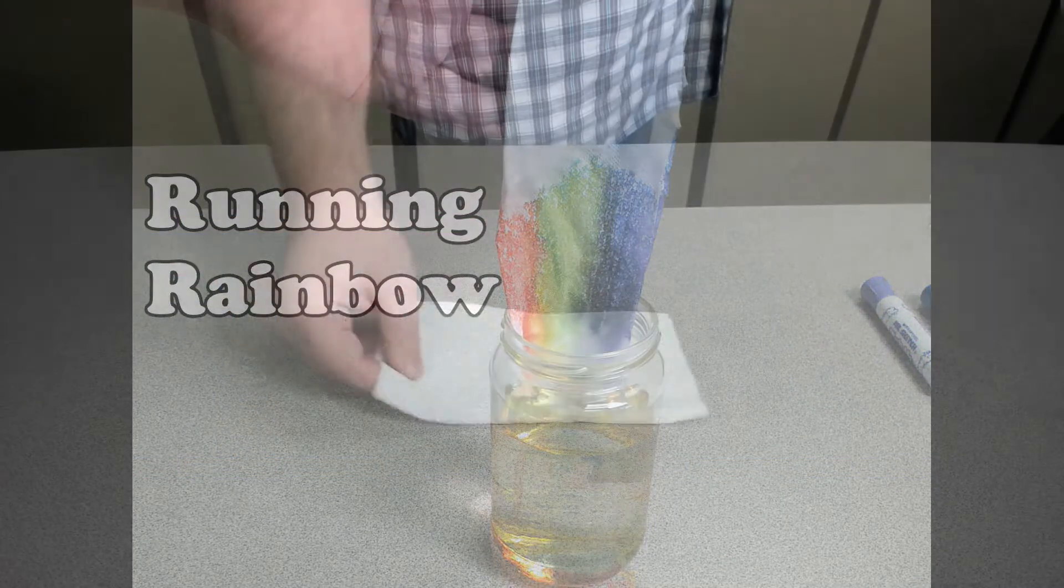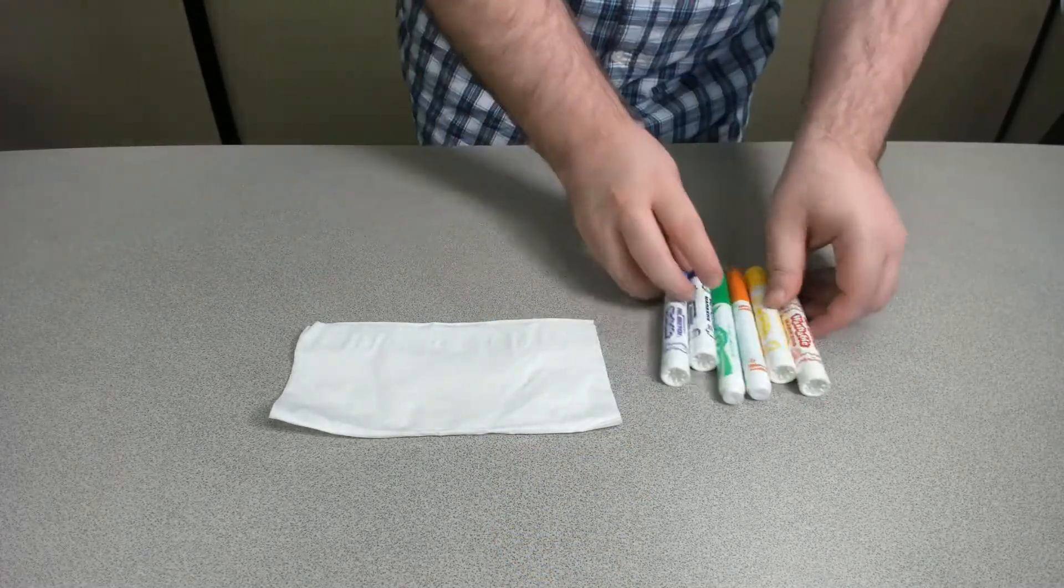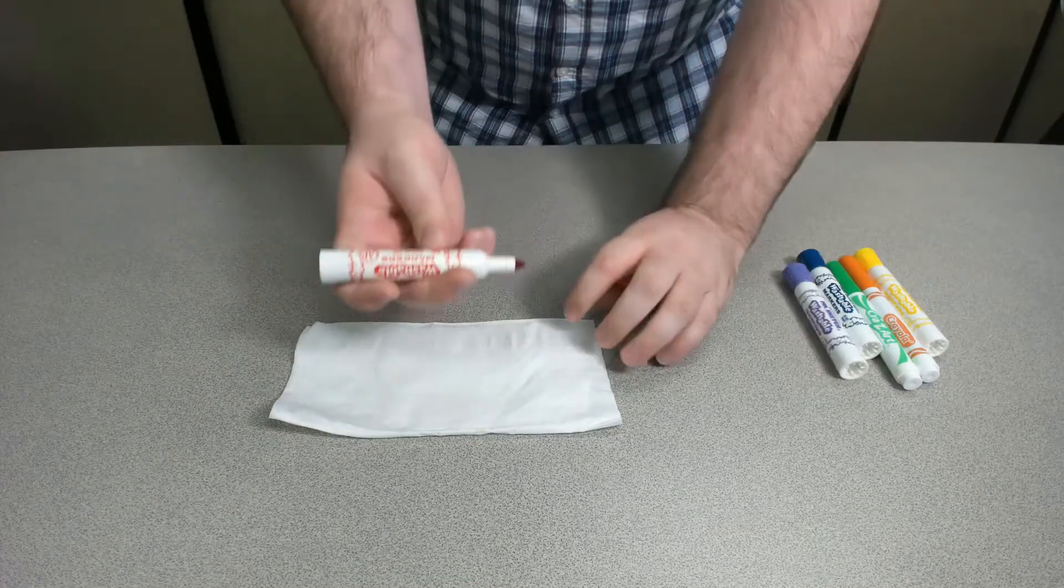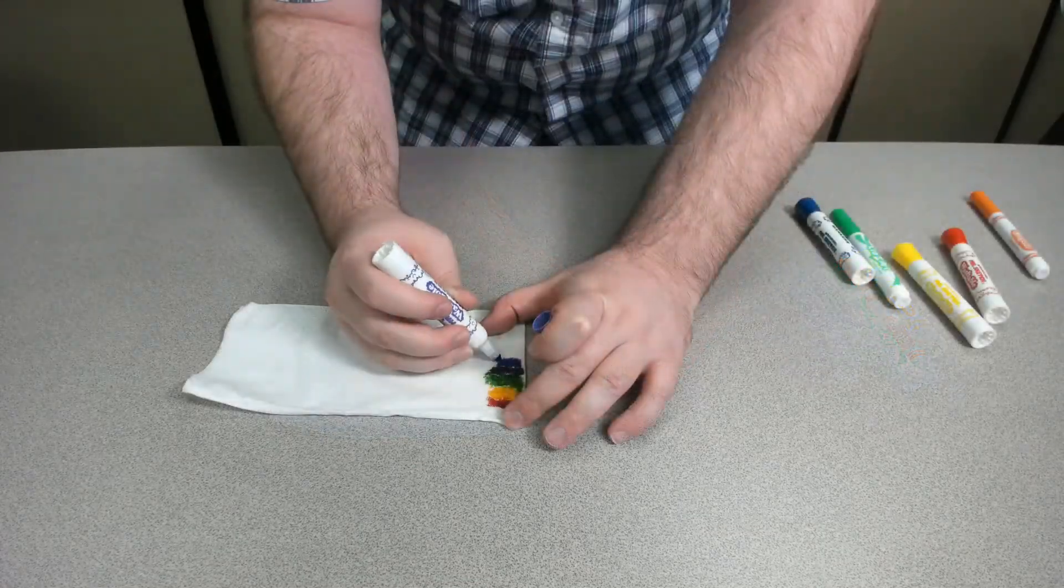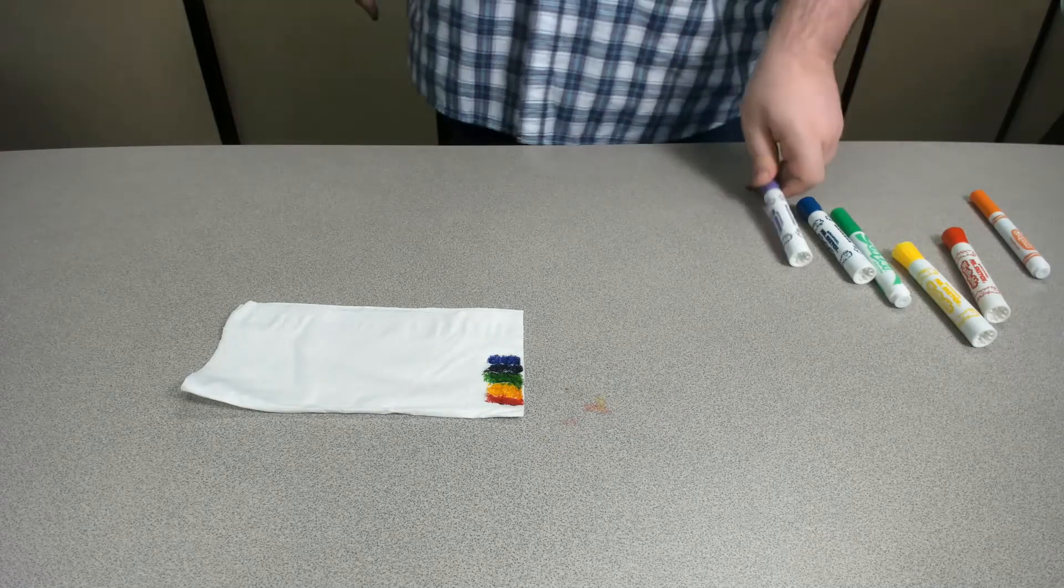For our first craft, go ahead and gather an assortment of colored markers, making sure they are the washable kind, and a paper towel or napkin. With these we're going to color a tiny rainbow on one of the edges of the napkin, creating about an inch-long stripe for each color.